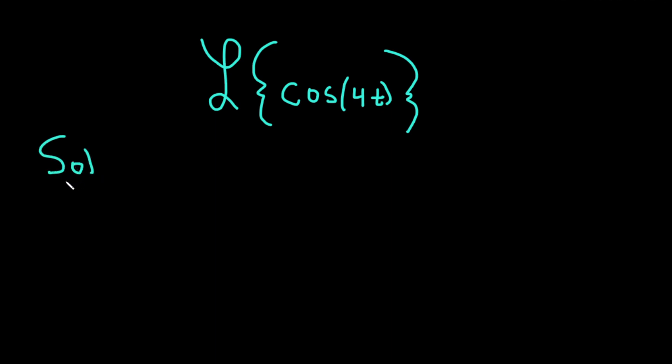Solution. So there is a formula that says if you want the Laplace transform of the cosine of kt, this is equal to s over s squared plus k squared.